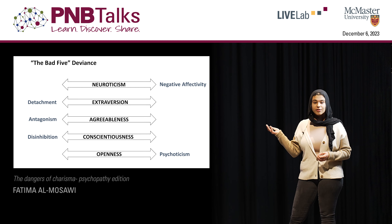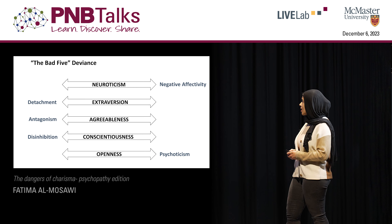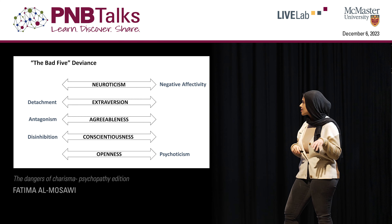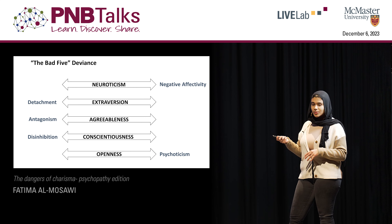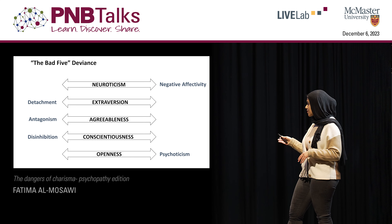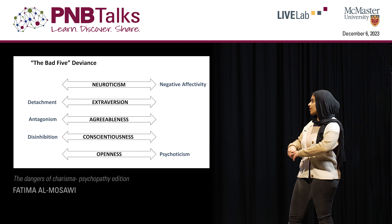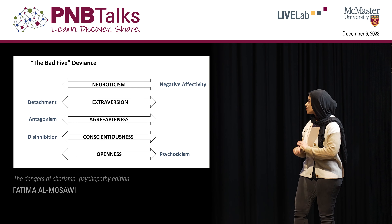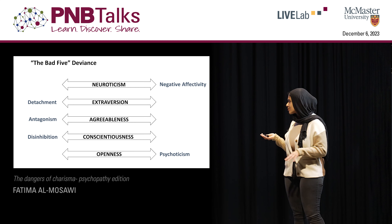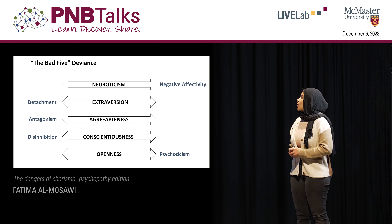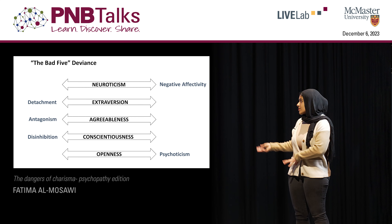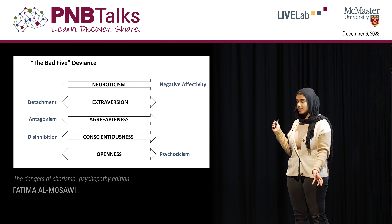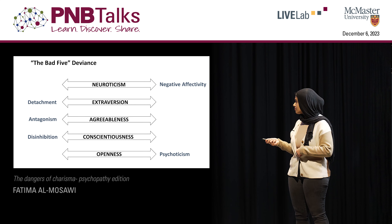Starting off with our first criterion for abnormality: deviance. Individuals with PDs have a collection of traits known as the bad five personality traits: negative affectivity, detachment, antagonism, disinhibition, and psychoticism. Importantly, these traits exist on the extreme ends of the Big Five personality traits — neuroticism, extroversion, agreeableness, conscientiousness, and openness to experience. We all exist on these spectrums to some degree, and those with personality disorders exist on the extreme ends, illustrating this deviance.